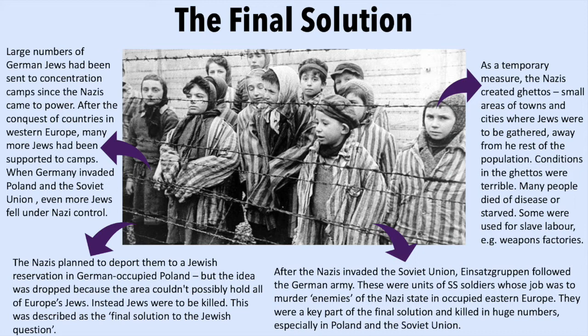Instead, Jews were to be killed. This was described as a final solution to the Jewish question. As a temporary measure, the Nazis created ghettos — small areas of towns and cities where Jews would be gathered away from the rest of the population.